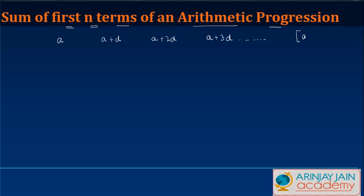The last term is the nth term, and we all know that it is written as a plus n minus 1 times d. Consider the situation where you need to find out the sum of all these numbers.